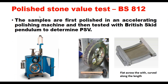The first test is the Polished Stone Value test, conducted as per BS 812. This is a two-stage test. In the first stage, samples are polished in an accelerated polishing machine and then tested with a British skid pendulum to determine their Polished Stone Value (PSV). The mould is flat across the width and curved along the length; 14 moulds are prepared to fit into the rim of the road wheel. The machine is fitted with a pneumatic wheel above, and a continuous supply of sand and water is made at the interface of the two wheels to cause abrasion of the aggregate.